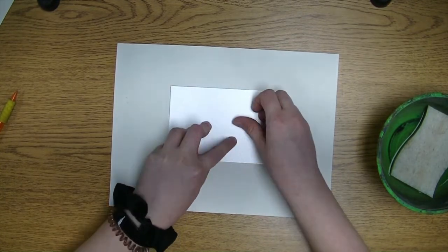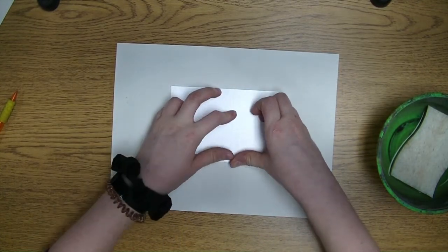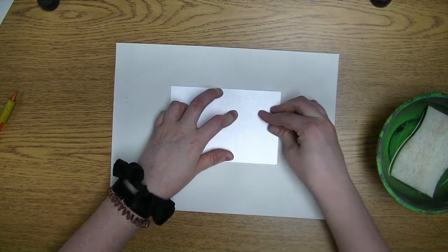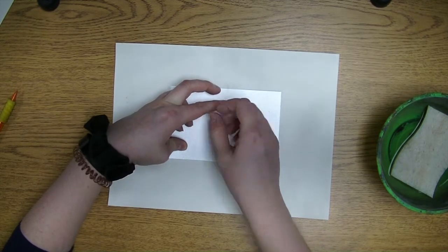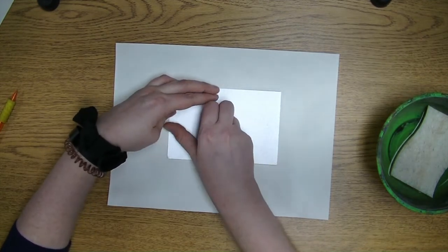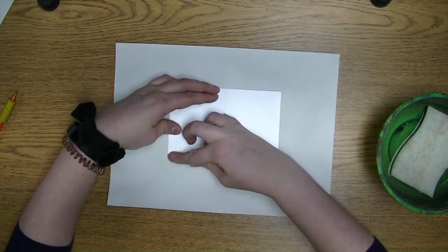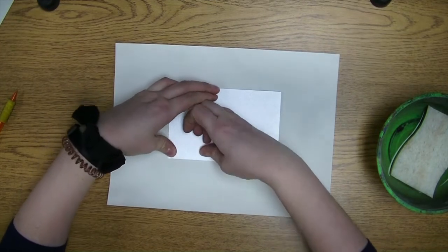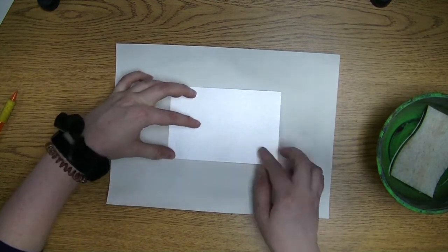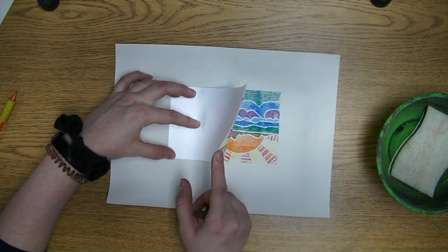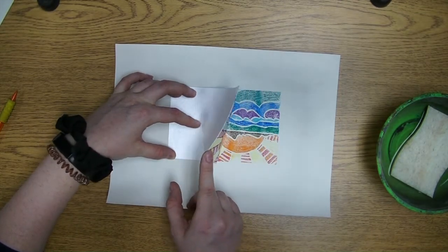We used water soluble markers, so what that water is doing is it is kind of activating that marker on the other side and pulling it onto the paper. I'm going to hold one side down and check the corner and see how it's going. If you feel like you've got some bald spots or need to rub it some more, go ahead and do that.